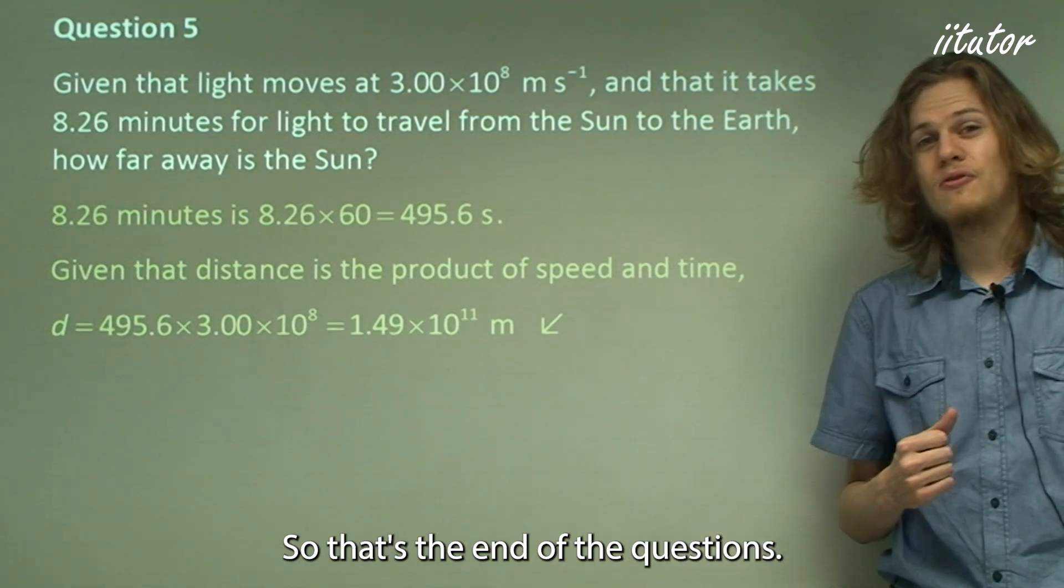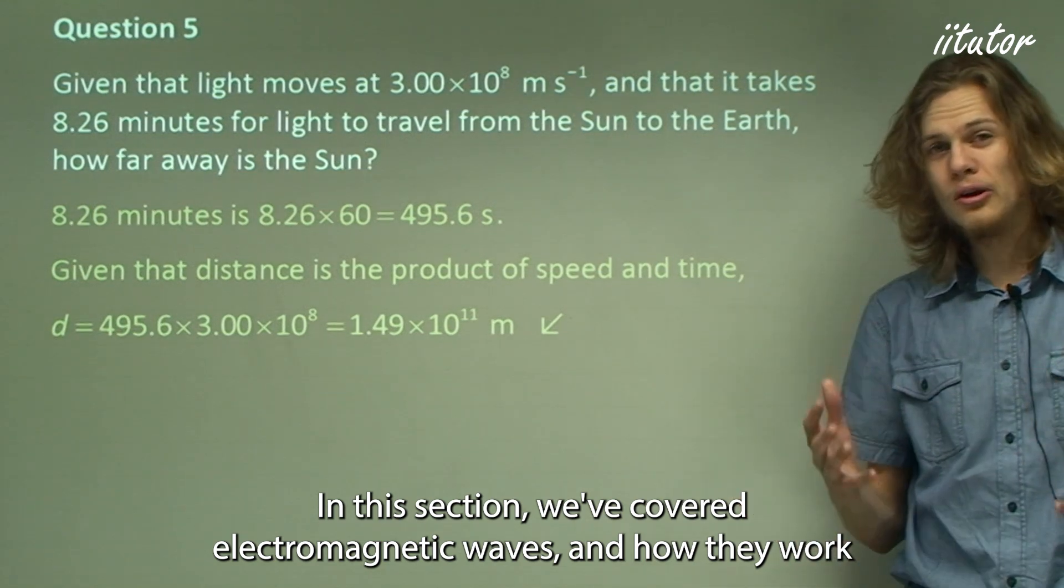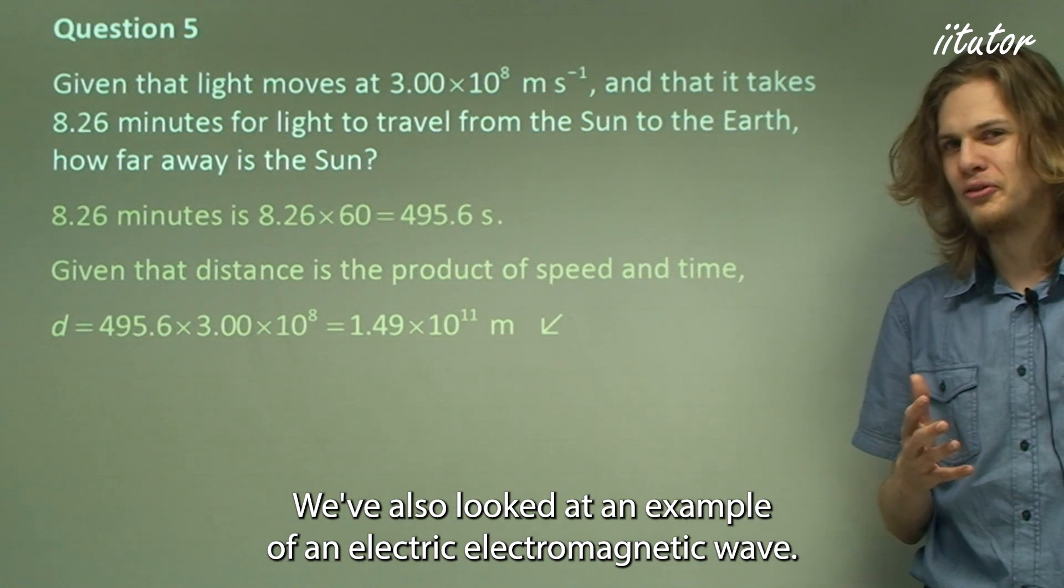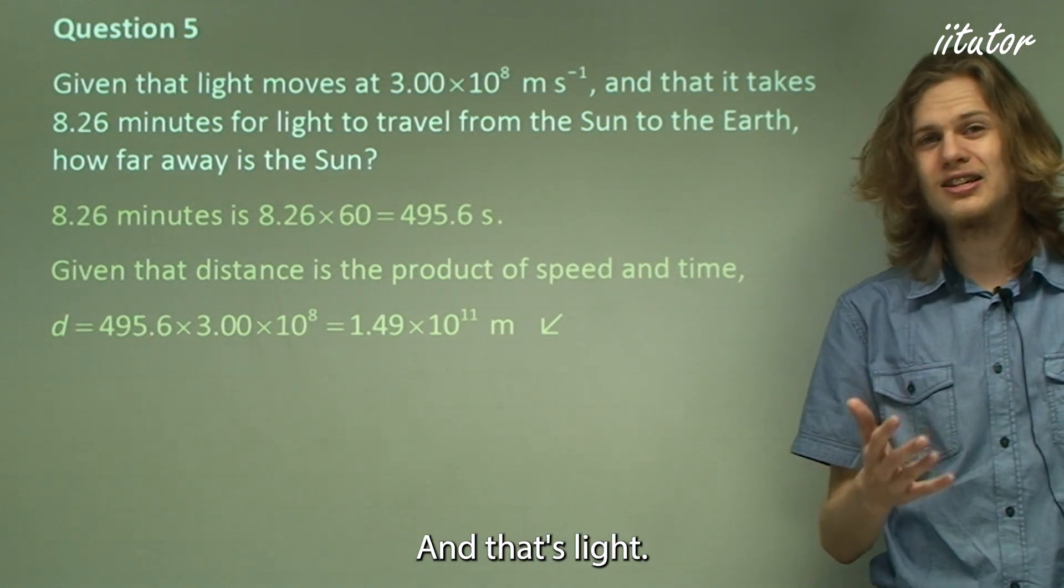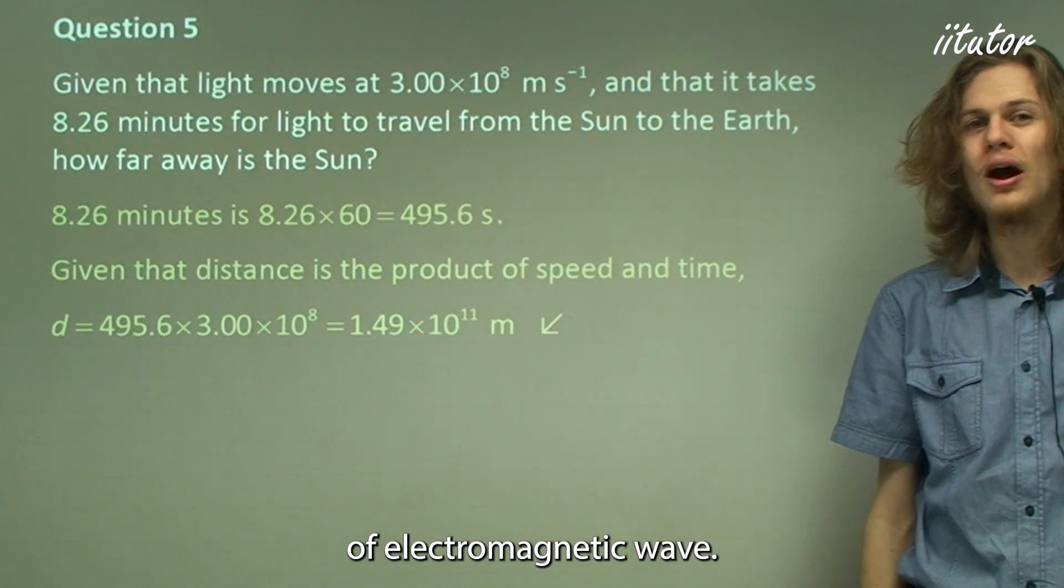So that's the end of the questions. In this section, we've covered electromagnetic waves and how they work. They're to do with the alternating electric and magnetic fields, of course. We've also looked at an example of an electromagnetic wave, and that's light. In the next section, we'll be looking in more detail at different sorts of electromagnetic waves.